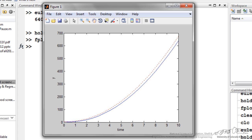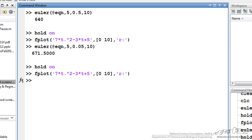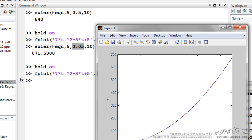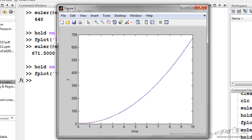I can reduce that error by decreasing the time step. So now I have reduced the time step to 0.05 and re-plotted this, and you can see that our estimate using the Euler method is pretty much spot-on to the actual solution.